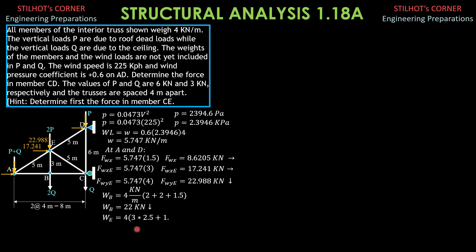So WE is 4 times 3 times 2.5, because there are 3 2.5 meter long members, half of the 5 meter long members attached to E, then plus half of member, half the length of member BE, which is 1.5. So WE is equal to 36 kN, and that would be downward.